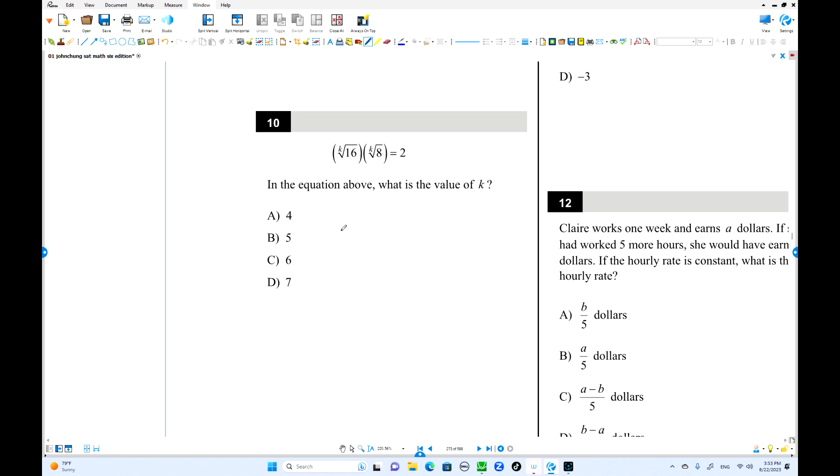Number 10. This is kk, same k. Index number is k. That equals 128. That is 2. So this is 128 to the 1 over k. That is 128. What is 128? 2 to the seventh power. 7 over k equals 1. I'll write it one more time. 7 over k equals 1. k equals how much? 7. It's D the answer.